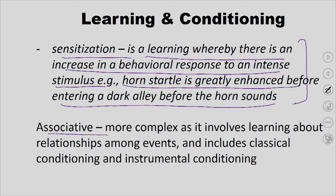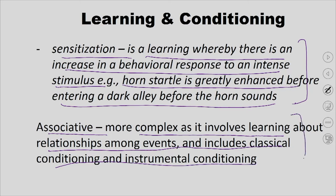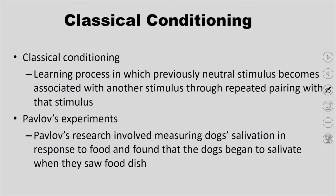In the associative form of learning, more complex stimuli are involved — it involves learning about relationships among events and includes classical conditioning and instrumental conditioning. In associative learning, people learn to associate a stimulus with another stimulus or a stimulus with a particular kind of response. Understanding stimulus-stimulus relations or stimulus-response relations, and what should be done to increase or decrease behavior, is what associative learning is about.